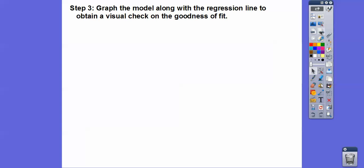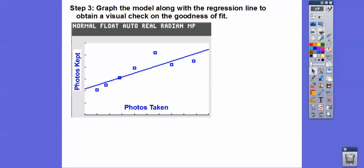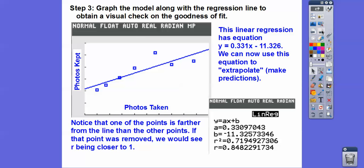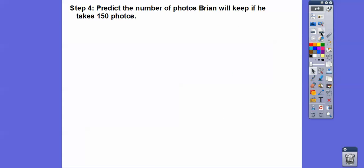So we're going to use that equation. Here's photos kept on the y-axis and photos taken on the x-axis. The linear regression line has that equation and we can use it to extrapolate. Notice all the points are close to the line. If that one outlier point wasn't there, r would be even closer to 1 — maybe he just took a lot more pictures that day.